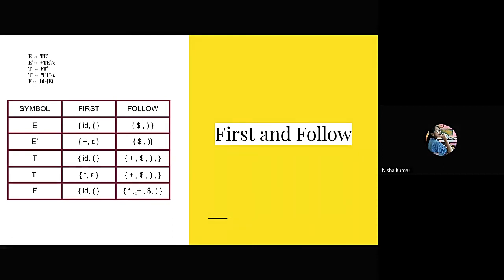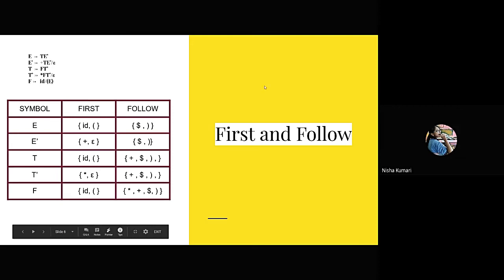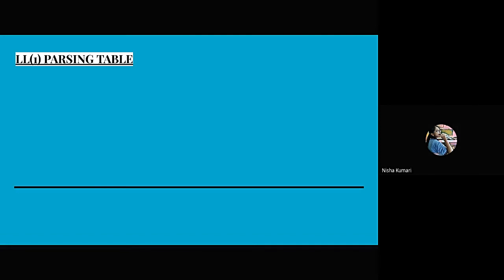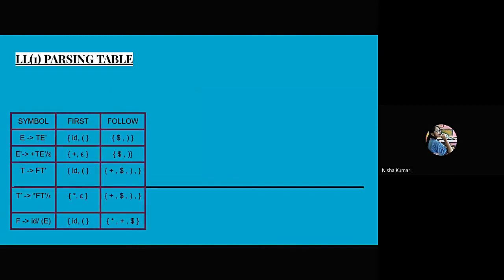Now we are going to create the LL1 parsing table using the First and Follow table created in the last slide. I have already copied the symbols along with their First and Follow values. I have already created the parsing table, but I will explain how we did that.